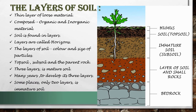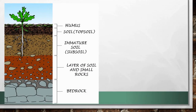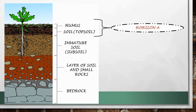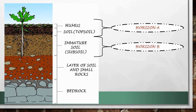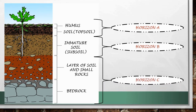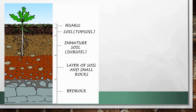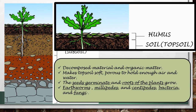Now let us understand the horizons of soil, that is, the different layers one by one. Humus and topsoil is also known as Horizon A. Subsoil is known as Horizon B. The layer of small rocks and bedrock is Horizon C. We begin with Horizon A, that is, the topsoil.